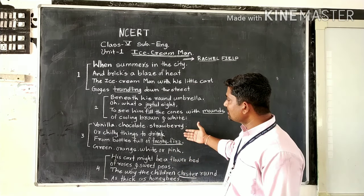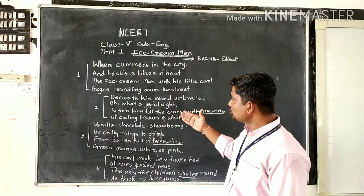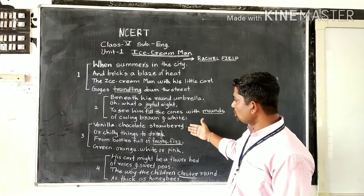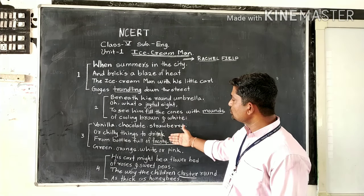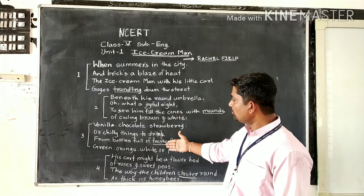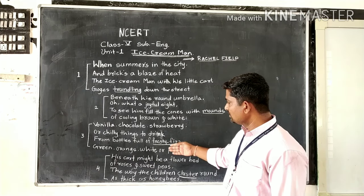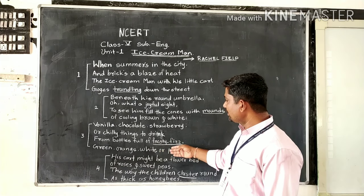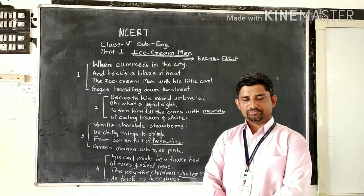Third stanza: 'Vanilla, chocolate, strawberry, or chilly things to drink from bottles full of bubbly fizz — green, orange, white or pink.'